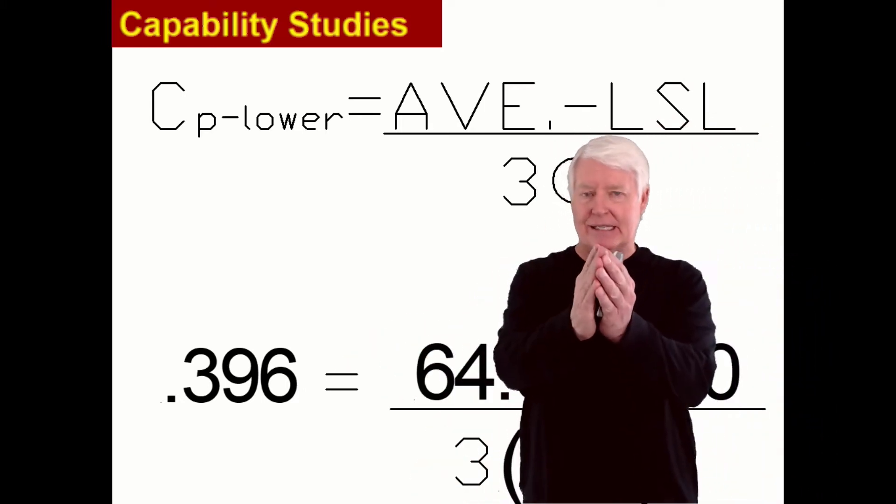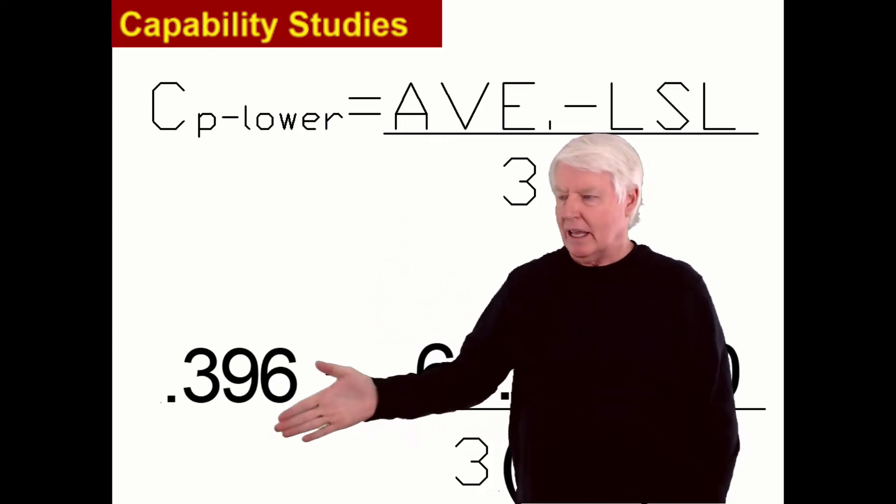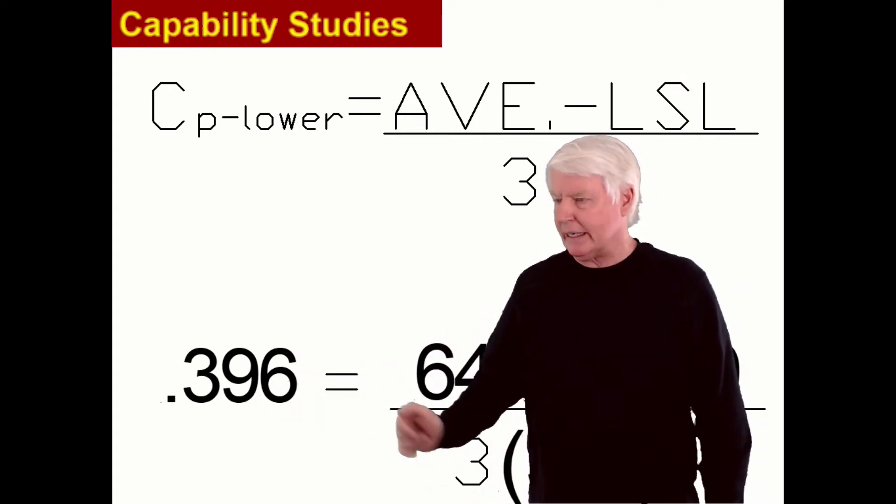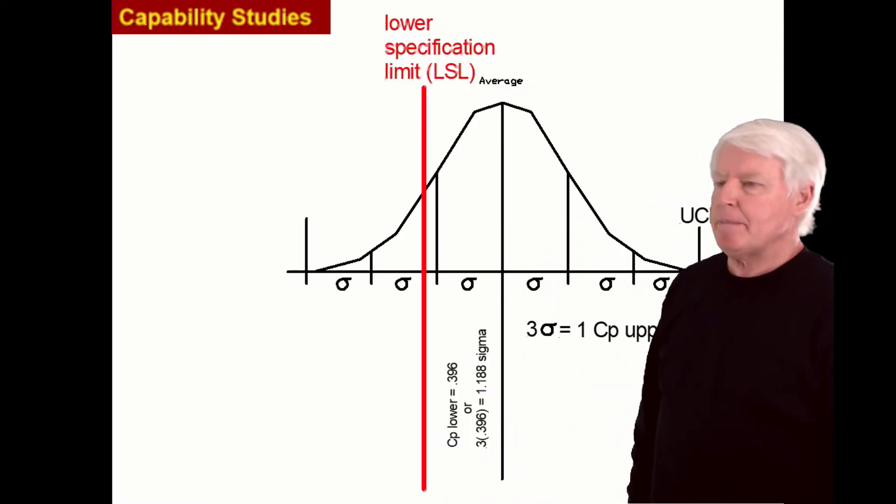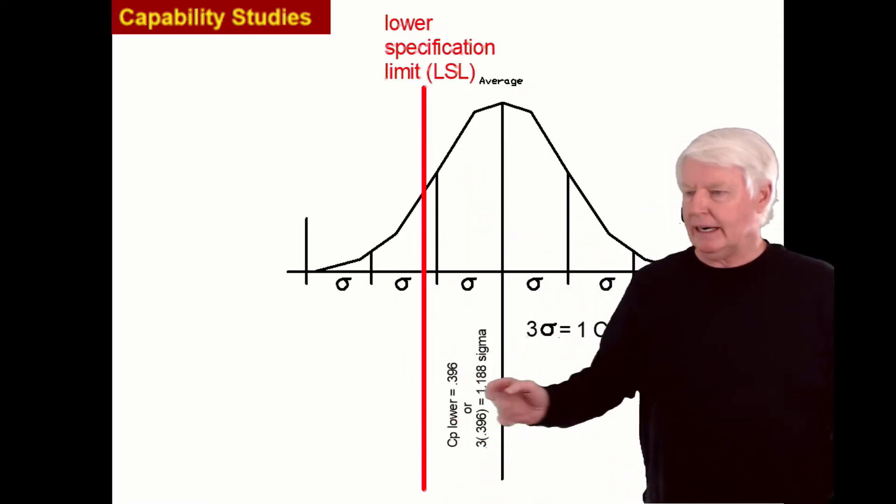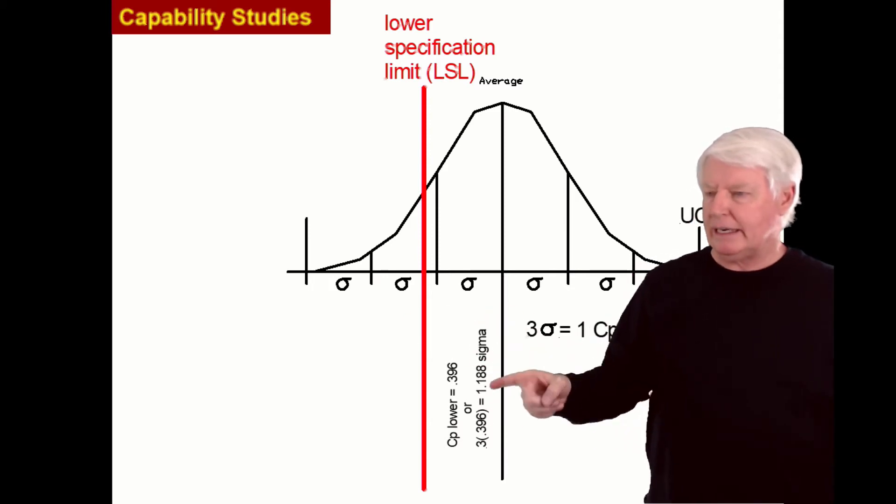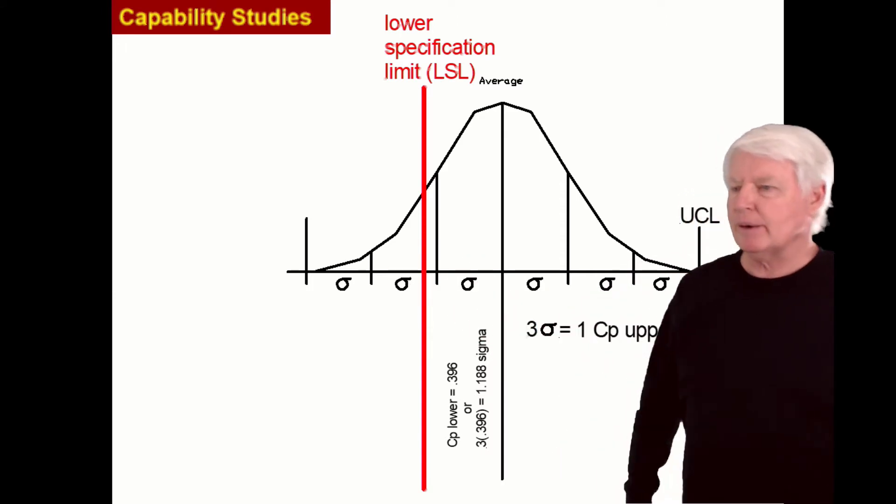What does that mean? It means the distance from the average out to the lower spec limit is only 39.6% of the three sigma unit. Or you could say 0.396 of the three sigma unit. There's the CP lower of 0.396. I multiplied that by three, which is 1.188 sigmas, and placed it right there.